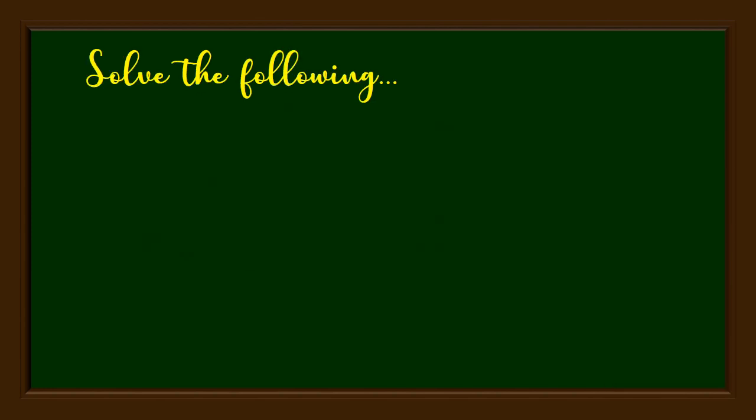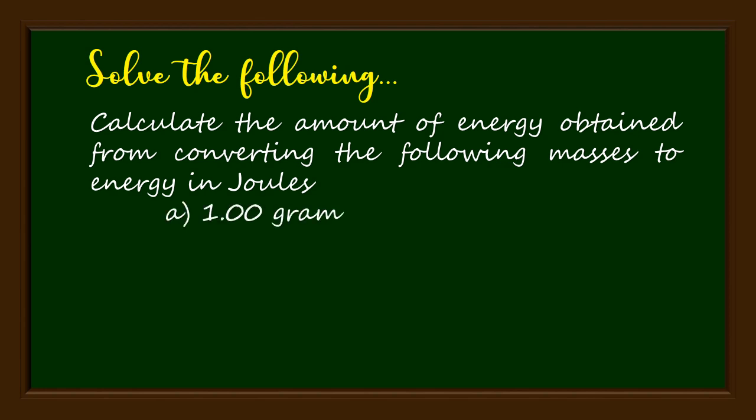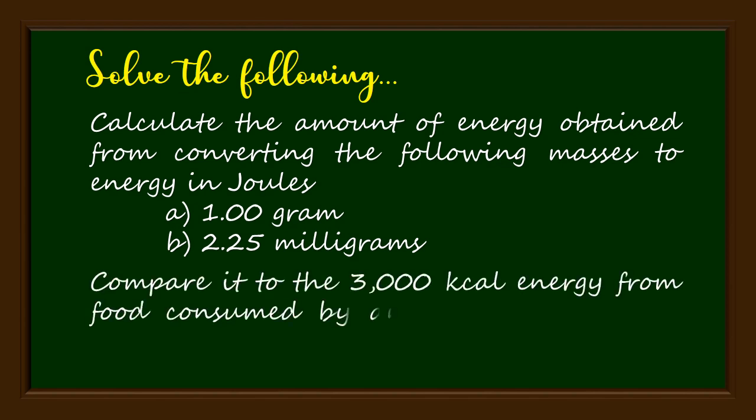To assess what you have learned, solve the following. Calculate the amount of energy obtained from converting the following masses to energy in joules. Letter A, 1.00 gram. Letter B, 2.25 milligrams. Then compare it to the 3000 kilocalories energy from food consumed by an average person in one day.